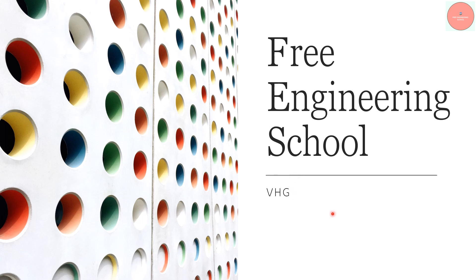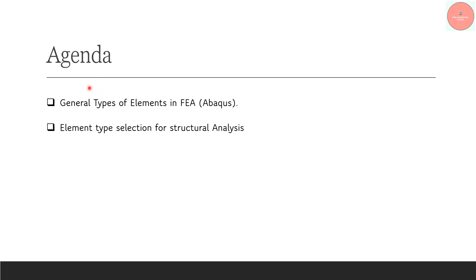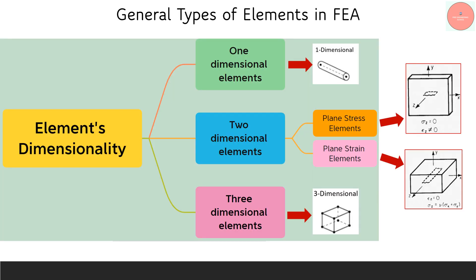Hello all, welcome back to Free Engineering School. Today we are going to discuss the general types of elements in finite element analysis, mainly focusing on Abaqus and what are the element type selections for structural analysis. These two topics are taken based on previous studies related to structural analysis, which include linear, non-linear, and post-static structural studies. Here we will discuss the general types of elements used in our day-to-day FEA studies.